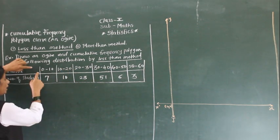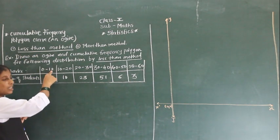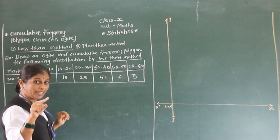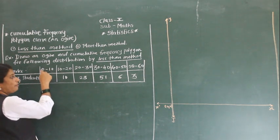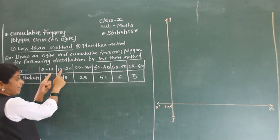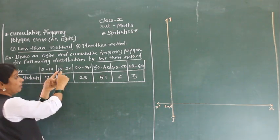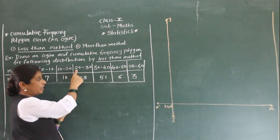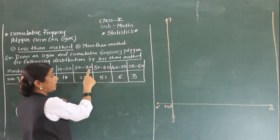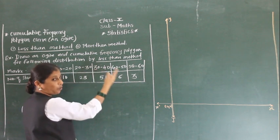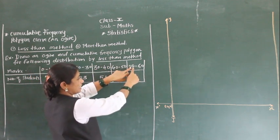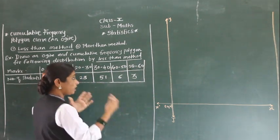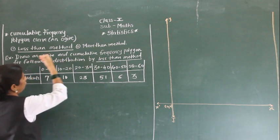Now, we have to draw this by the less than method. If you consider the marks: 0 to 10 means more than 0 but less than 10. If a student got exactly 10 marks, that student will not come in this class — they will come in the 10 to 20 class, which means more than 10 but less than 20. Similarly, 20 to 30 means more than 20 but less than 30. For class 50 to 60, marks are more than 50 but less than 60.